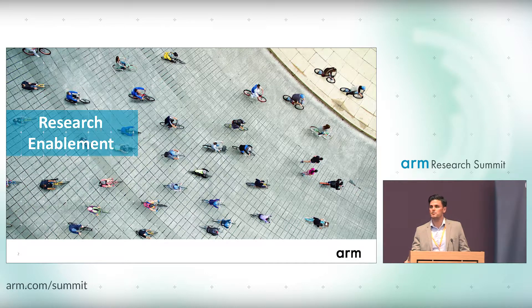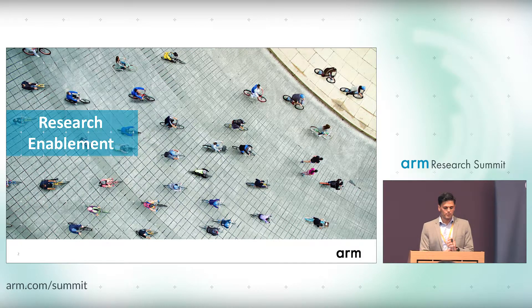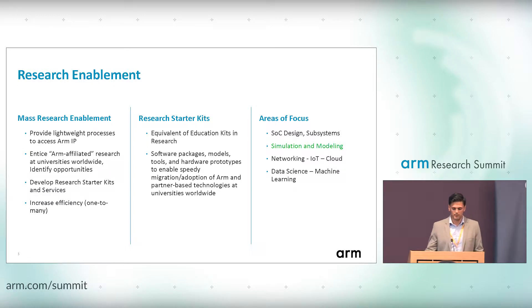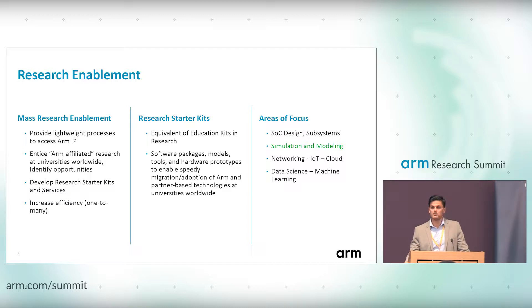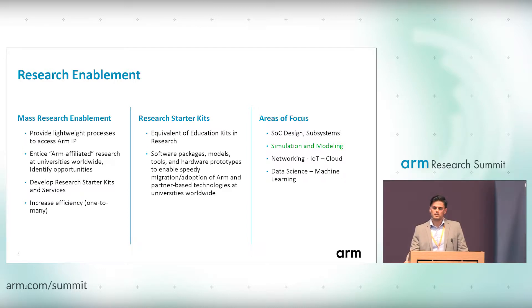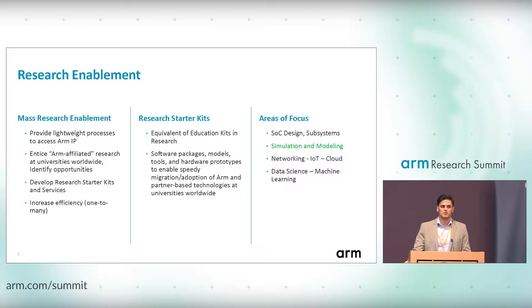I would like to talk about research enablement and what we mean by that. Our first project on research enablement is what we released on gem5 on system modeling. We call it mass research enablement because we would like to provide lightweight processes to access ARM IP, and we would like to entice ARM-affiliated research activities at universities worldwide. Through that, we would like to identify opportunities for further collaborations with researchers or specific universities. During the process, we would develop research starter kits and services, the first of which is on system modeling.